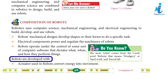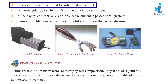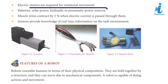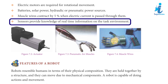Robots are developed with actuators used to convert energy into movement. Electric motors are required for rotational movement. Power sources include batteries, solar power, hydraulic, or pneumatic systems. Muscle wires contract by 5% when electric current is passed through them. Sensors provide knowledge of real-time information on the task environment.